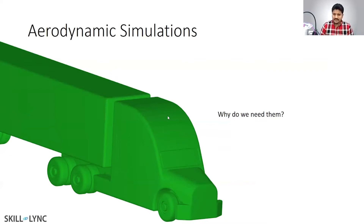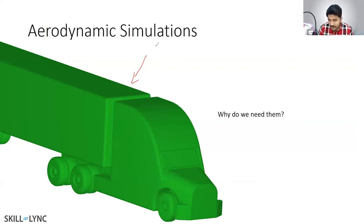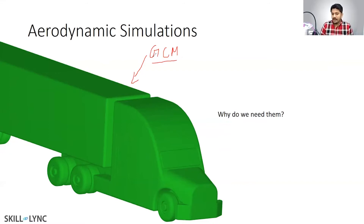So this right here is what you call the NASA Generic Conventional Model Truck — GCM stands for Generic Conventional Model Truck. This is basically a CAD model, and I'll be showing you more pictures later. The reason why people do analysis on this is because a lot of experimental data is available.